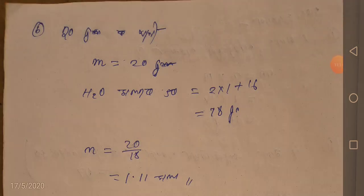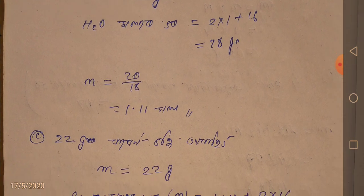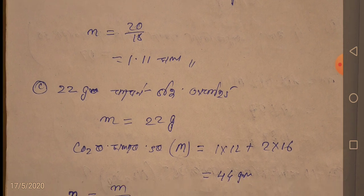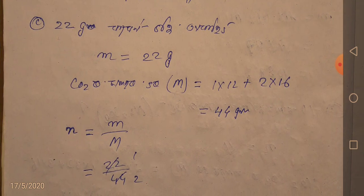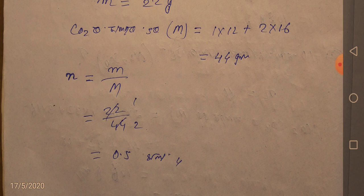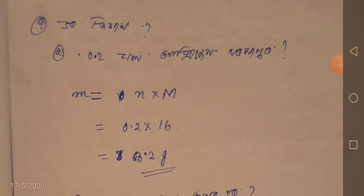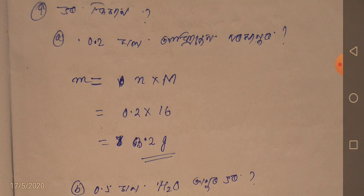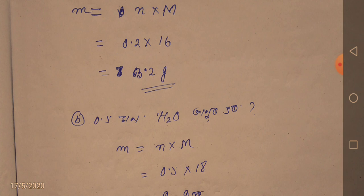20 grams of water is equal to 1.11 mol. 22 grams of carbon dioxide. 0.24 grams of water equals 0.5 mol of water. If water percentage equals 0.2 mol, oxygen for that — molar mass 0.2 into 16 — answer is 3.2 grams.